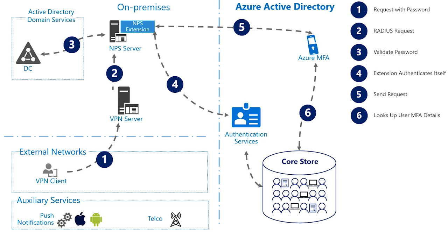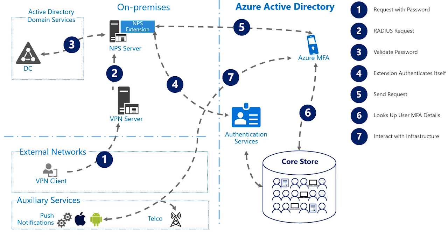What happens when the user's default method is a push notification or a phone call? How does the user receive the request? The Azure MFA service interacts with the infrastructure, such as initiating a push notification to the user's registered Microsoft Authenticator device, or dialing the phone number that they have registered to receive the phone call. It is at that point where the user can receive the call or push notification and either approve or deny the Azure MFA request.